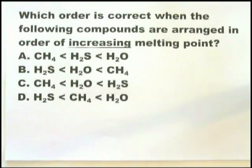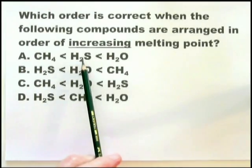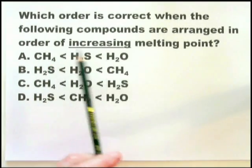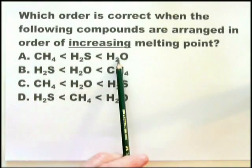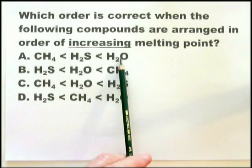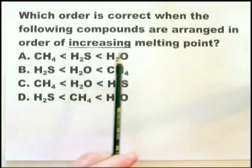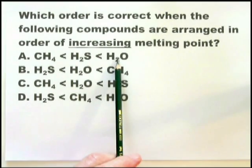This question comes as either a Paper 1 question or a Paper 2 question. In Paper 1 you're simply expected to recognize the correct answer; in Paper 2 you're expected to explain it. You're expected to recognize immediately that water has the highest melting point — and it would also have the highest boiling point — even if you don't know the melting points of hydrogen sulfide and methane. If this were a Paper 2 question, the reason is that water has hydrogen bonding, whereas H₂S and methane do not.